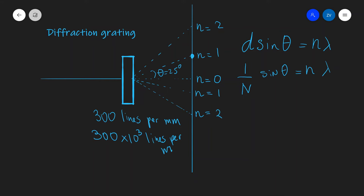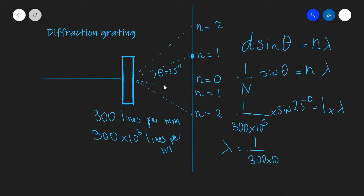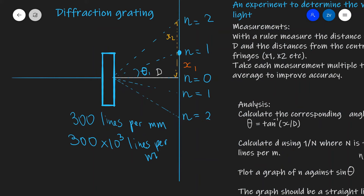Let's do a calculation for the first order of diffraction. With d = 1/(300 × 10³) and θ = 25 degrees, we have d sin θ = 1 × λ. So λ = (1/(300 × 10³)) × sin 25°, which gives us 1.4 × 10⁻⁶ meters. A diffraction grating can be used in an experiment to determine the wavelength of light, and in telescopes it can identify which wavelengths are present in starlight.